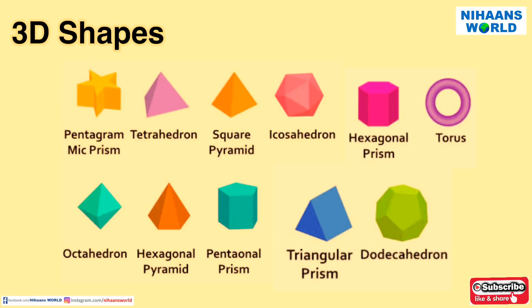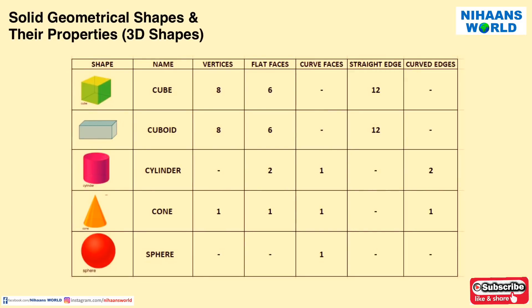Now let us look at some more 3D shapes and their properties. A cube has 8 vertices, 6 flat faces, and 12 straight edges.